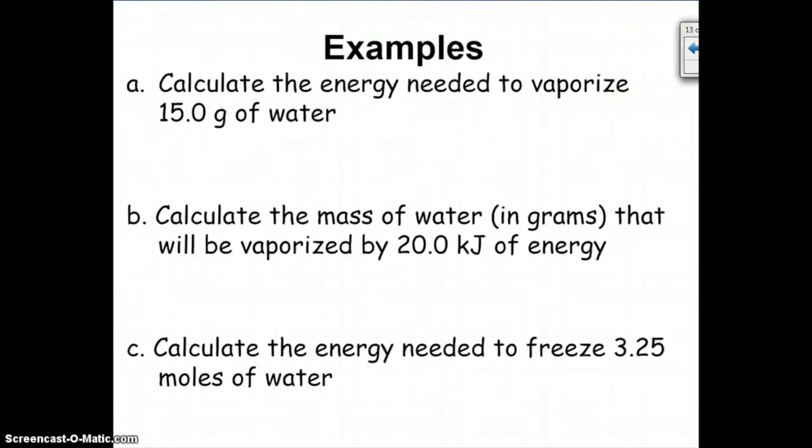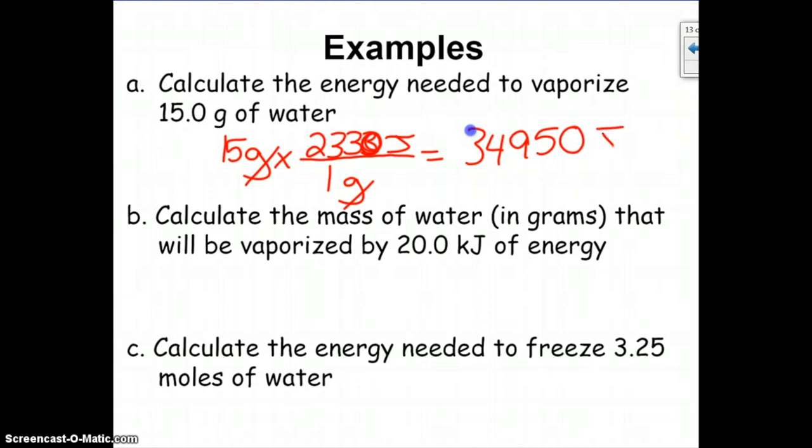Now let's look at a little calculation. The energy required to vaporize 15 grams of water. We'll start with 15 grams of water vaporized, which means we're going to need the heat of vaporization. We're just going to line up our units. We got one gram on bottom, 2,330 joules on top. The grams cancel, so it's going to take 15 times 2,330 joules.